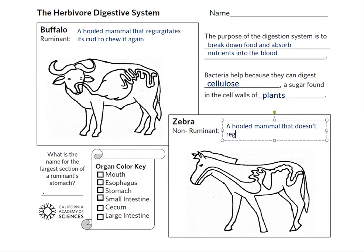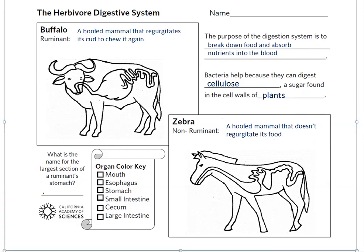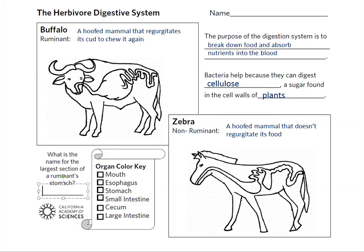Since zebras do not have a rumen, the cellulose in the grasses they eat gets broken down differently. In the buffalo's rumen, bacteria break down the cellulose as the rumen churns, which aids in the process of chemical digestion. Ruminants might spend six to eight hours per day chewing and regurgitating their food, which results in approximately 60 to 75 percent of the plant matter being broken down before it reaches the stomach. Zebras do not have a rumen and instead have a much smaller stomach, so they must eat several times per day.